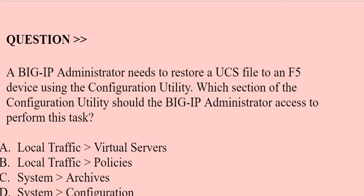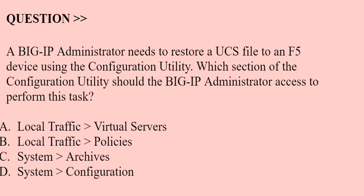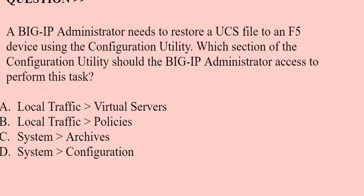Next question: A BIG-IP administrator needs to restore a UCS file to a device using the configuration utility. Which section of the configuration utility should the BIG-IP administrator access to perform this task? Option A: Local Traffic > Virtual Servers. Option B: Local Traffic > Policies. Option C: System > Archives. Option D: System > Configuration.